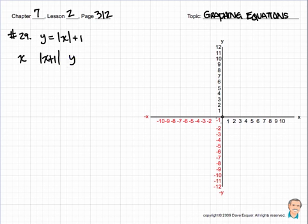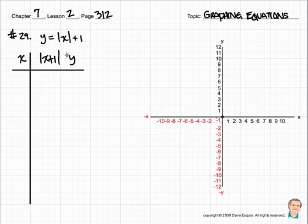x, we have the absolute value of x plus 1. And then we have y. So I'm going to try to make my chart a little bit neater this time. Not sure how successful I'm going to be here. Bear with me.